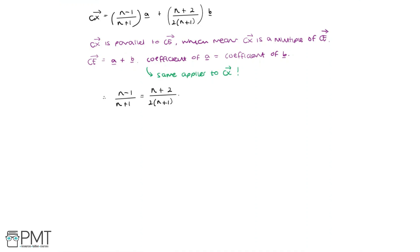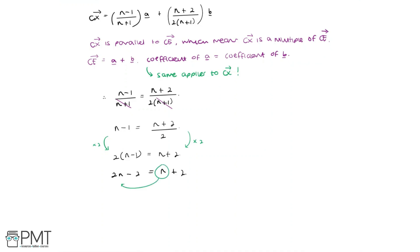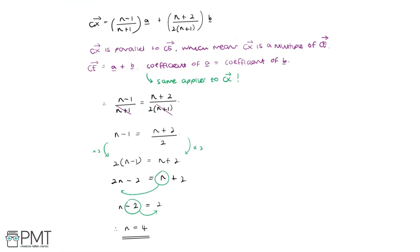Now we solve for N. Since N plus 1 appears in both denominators, they cancel, leaving N minus 1 equals (N plus 2) over 2. Multiplying both sides by 2 gives 2(N minus 1) equals N plus 2. Expanding: 2N minus 2 equals N plus 2. Subtracting N from both sides gives N minus 2 equals 2, and adding 2 to both sides gives N equals 4.